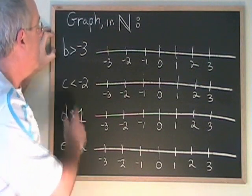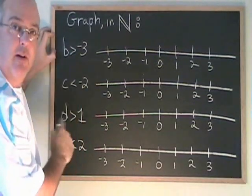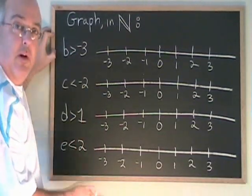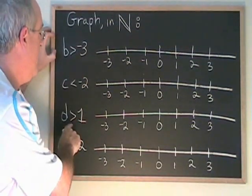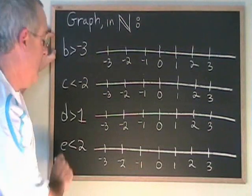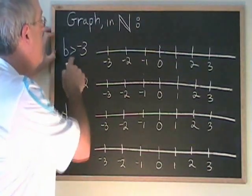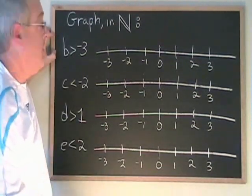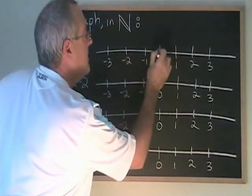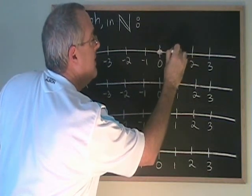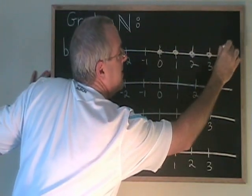Here are four more equations that we're going to graph in natural numbers. The difference is that I don't have the extra little line that means 'or equal to' in any of these. I have b greater than negative 3, c less than negative 2, d greater than 1, e less than 2. b greater than negative 3 — all natural numbers are greater than negative 3, so the natural numbers that are greater than negative 3 start with 0 and continue onwards forever in the positive direction.